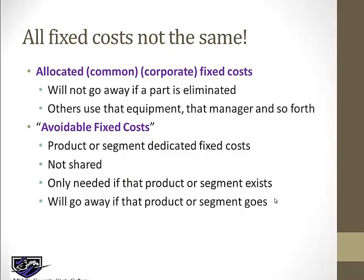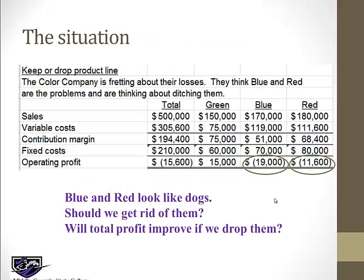Some fixed costs are different from other fixed costs. Looking back at the prior screen, we have sales, variable costs, contribution margin, fixed costs, and operating profit. Those variable costs are specific to the sales — materials, labor, variable overhead related to getting those sales done. But those fixed costs, since they don't change with activity, may not be related to the activity in each product line. They could have been allocated, or they may be genuinely related to the product line.